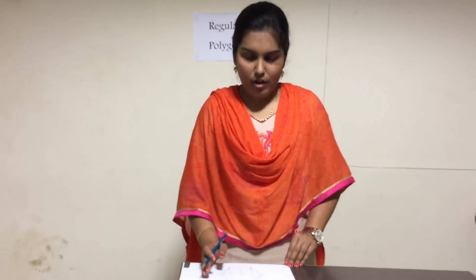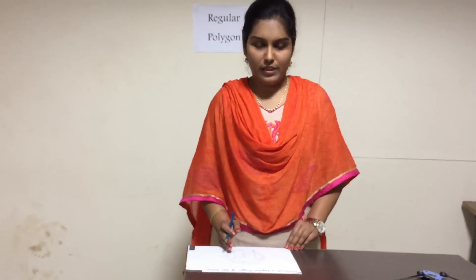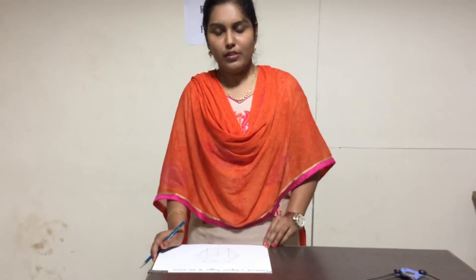So we can also draw septagon as well as octagon using this method. For that, for septagon you need to point out the point 7, for octagon you have to take the point 8 as center and 8A as radius. So by this method we can draw regular polygon of any different sides. So I guess I have cleared all your doubts and in the next video I will let you know another method of drawing regular polygon with the help of using a protractor. Thank you.